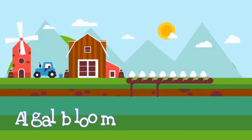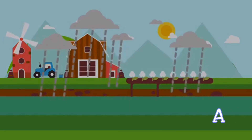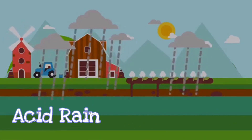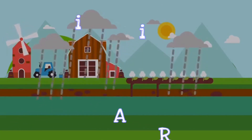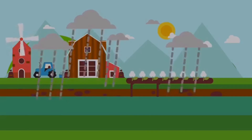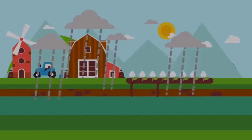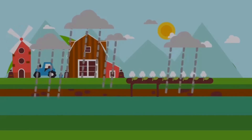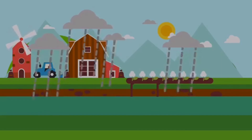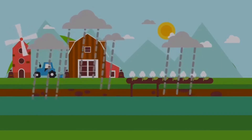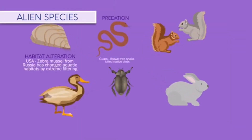Acid rain is a consequence of humans polluting the air. This causes lakes and water bodies to become more acidic, killing fish, mollusks, amphibians, and other species.